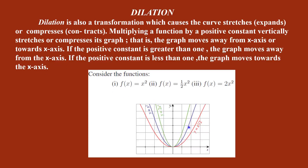So in comparison, the green color graph moves away from the x-axis. If the positive constant is greater than 1, the graph moves away from the x-axis. If the positive constant is less than 1, it moves towards the x-axis.